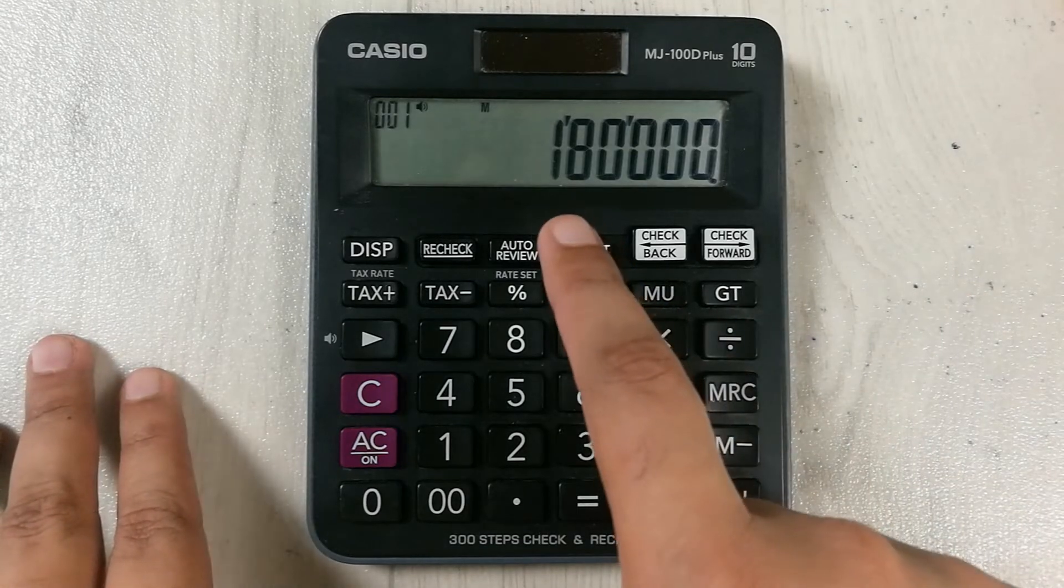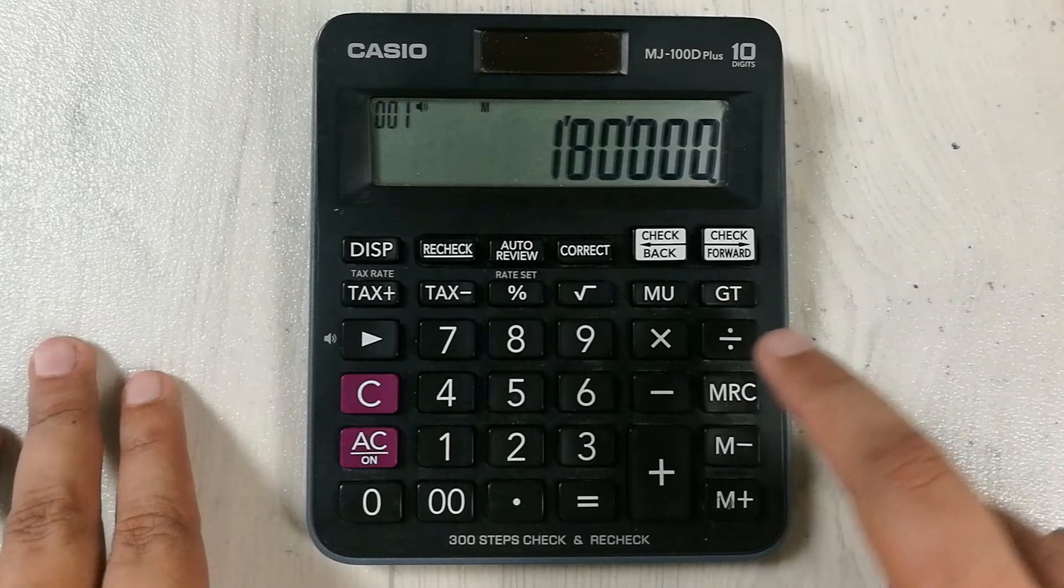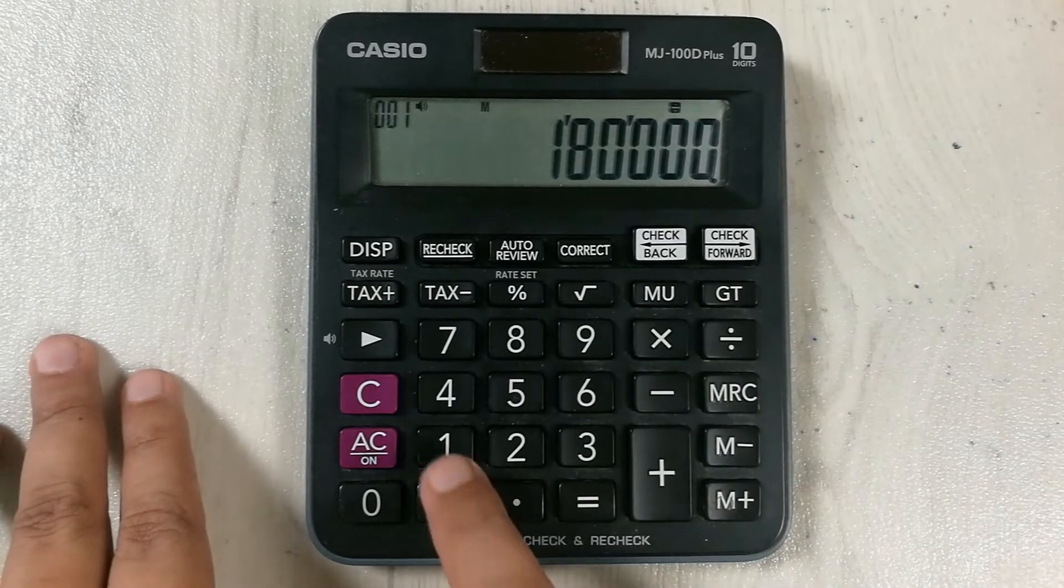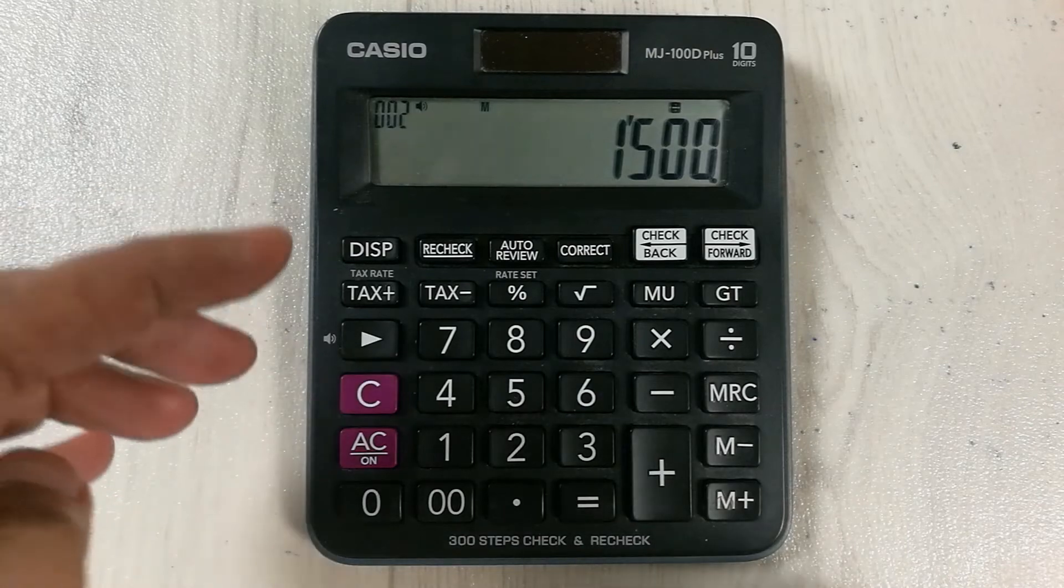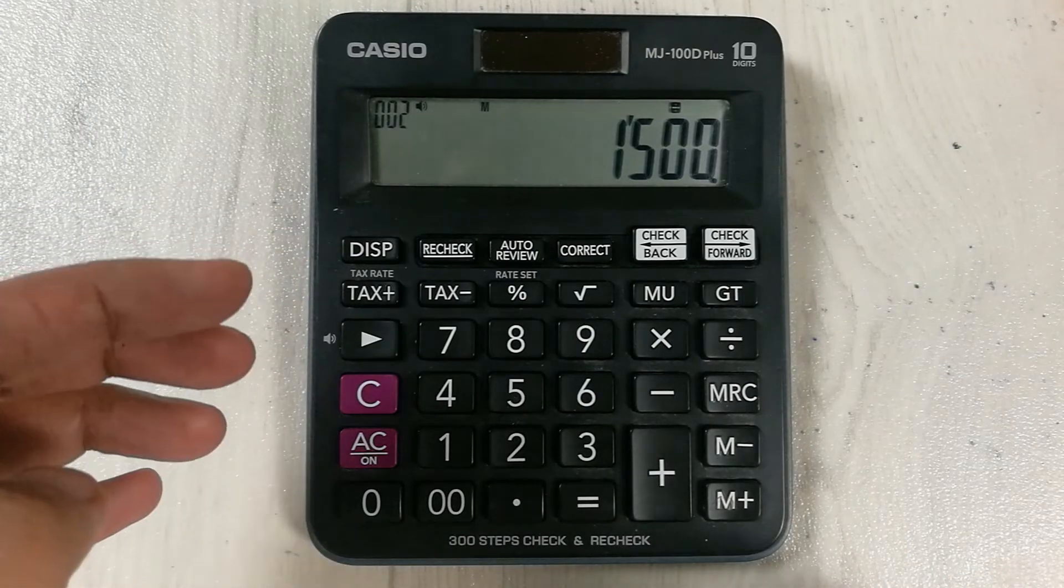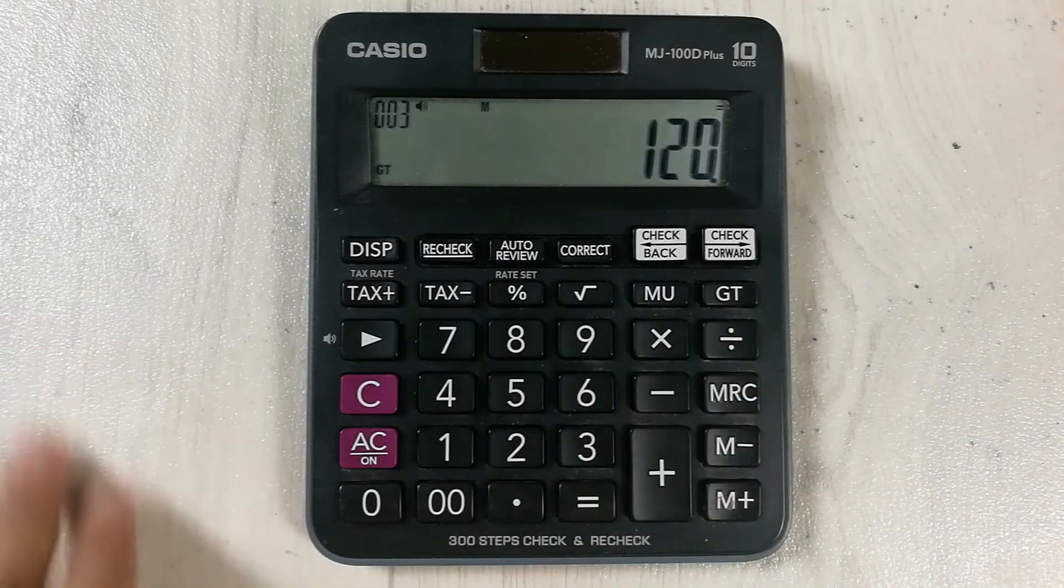So it means we have to divide 180,000 by 1,500, which is our area in square feet. Then we press the equal button. So here is our answer.